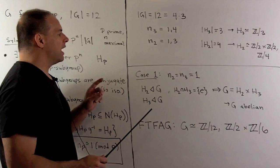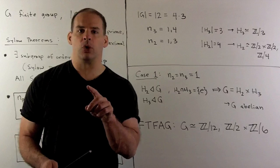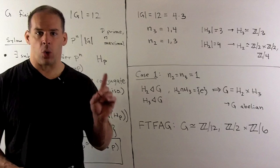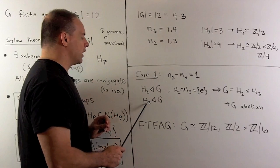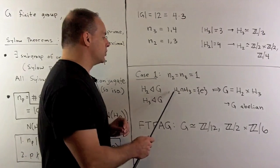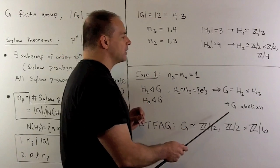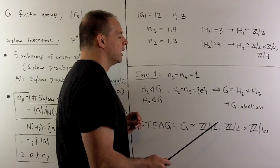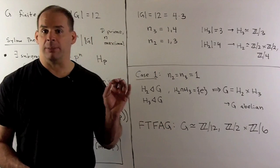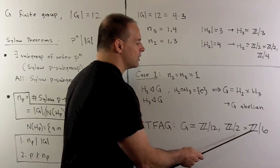If I consider the case where n sub 2 equals n sub 3 equals 1: if we conjugate any Sylow p-subgroup, we get another one back. If there's only one, that means our Sylow p is normal. So H_2 is normal in G and H_3 is normal in G. Considering the orders of elements, the intersection of a Sylow 2 with a Sylow 3 is the identity element, and we can show that our group is a direct product of H_2 with H_3. Because the factors are abelian, that means our group is abelian. By the fundamental theorem of finite abelian groups, G is isomorphic to either Z mod 12 or Z mod 2 cross Z mod 6.